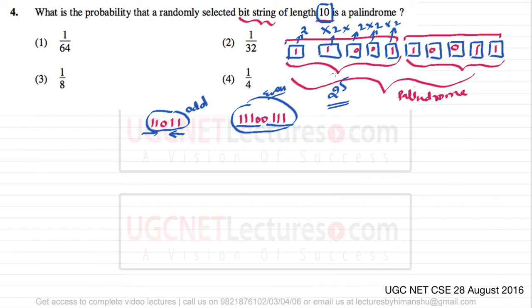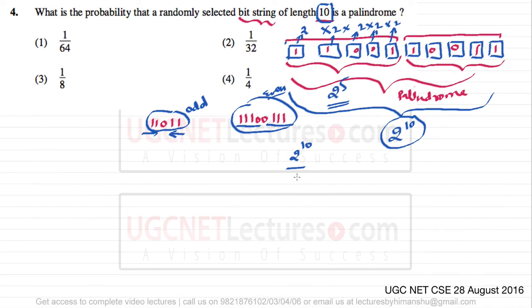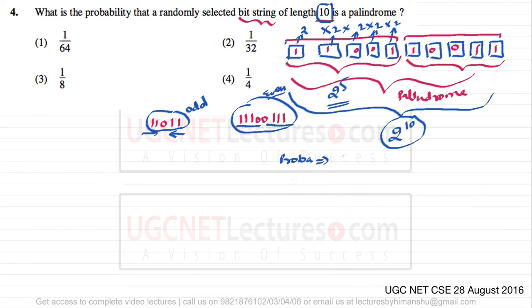Those 2^5 combinations for the first five bits determine the last five as well. In total, there are 2 raised to power 10 combinations for a 10-bit string. The number of palindrome strings is 2^10 divided by 2^5, which equals 2^5. So the probability equals 2^5 divided by 2^10, which simplifies to 1 over 2^(10−5).